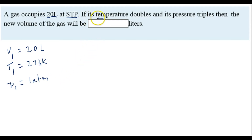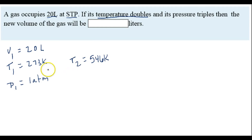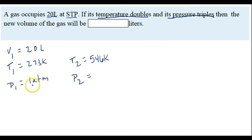It says right here if its temperature doubles, so the temperature is going to double. If the temperature is doubling, then T2 is going to be 546 — I took 273 and doubled it to get 546. And it says right here that its pressure triples, so if we start off at one atmosphere and its pressure triples, then we have a second pressure P2 of 3 atmospheres.